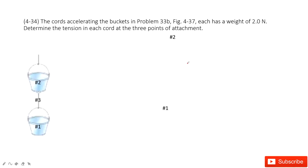In this one, we can see it tells us we need to consider the mass of the cords. It tells us the weight of the cords is 2 newtons. Therefore, when we consider these problems, it should be 3 objects connected together: number 1, number 2, and number 3. Number 3 is the cords.